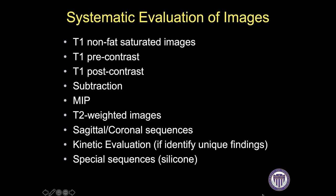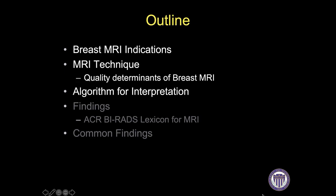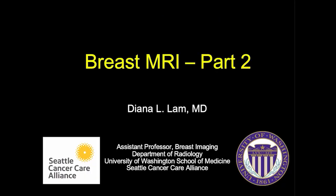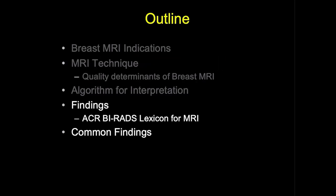We have now reviewed the majority of sequences seen on breast MRI, and will go over kinetic evaluation and special sequences in the next part. That concludes the first part. Welcome to part two of a basic brief overview of breast MRI. We will next explore the three types of findings described on breast MRI, then go through a few case examples of common findings.